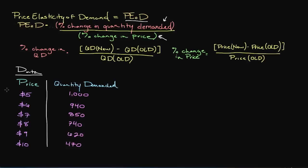So you can see here that we need some data in order to actually determine the price elasticity of demand. And that is this table, or not really a table, but these two columns here.